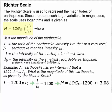From this information, we can say that I equals 1200 times I sub not. And that means that I over I sub not equals 1200.